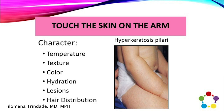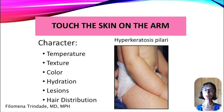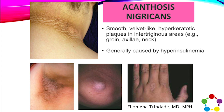For the skin, look at texture, temperature, color, hydration, and hair distribution. If you see those small nodules on the back of the arm — hyperkeratosis pilaris — think low omega-3 status. Look around the neck for acanthosis nigricans, the darkened area around the neck, which is highly associated with insulin resistance. Particularly in the Latino population, there is over a 90% correlation between acanthosis nigricans and insulin resistance. You can also see it in the axilla, elbows, or inguinal area — anywhere with intertriginous tissue.